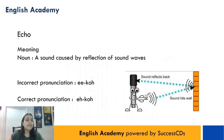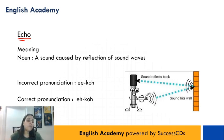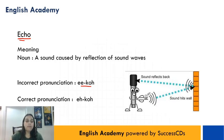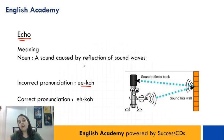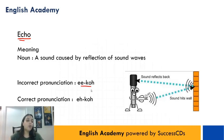The next word is E-C-H-O. Usually log isse pronounce karte hain 'eco', but iski correct pronunciation is 'echo'. Aur iska matlab hota hai a sound caused by reflection of sound waves. Jab bhi hum pahado pe jate hain aur zor se apna naam lete hain, toh pahado se jo awaaz takra ke waapis aati hai, usse hum 'echo' bolte hain, nahi 'eco'.